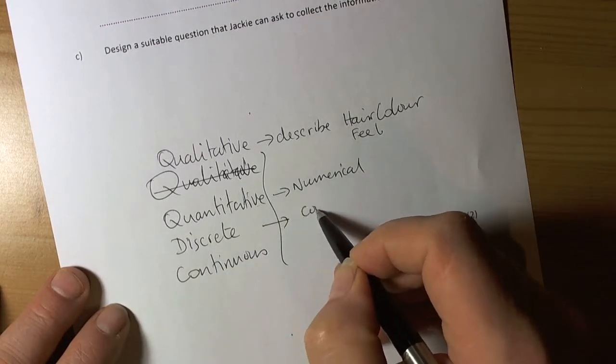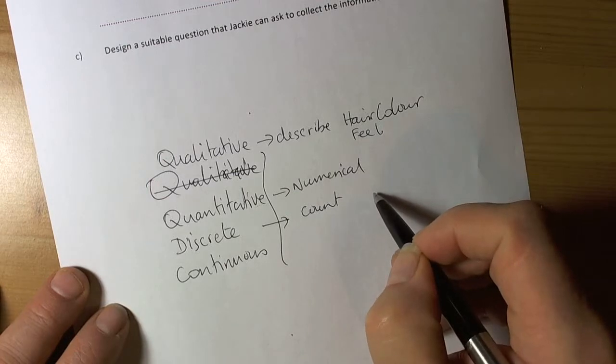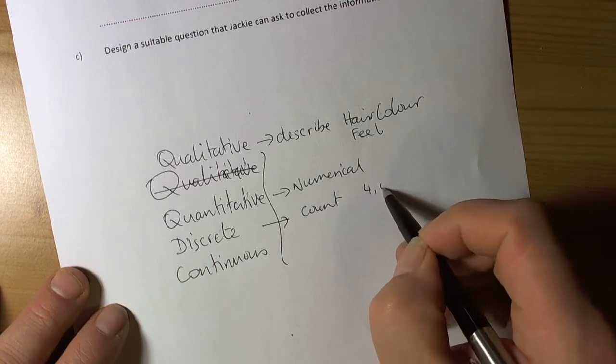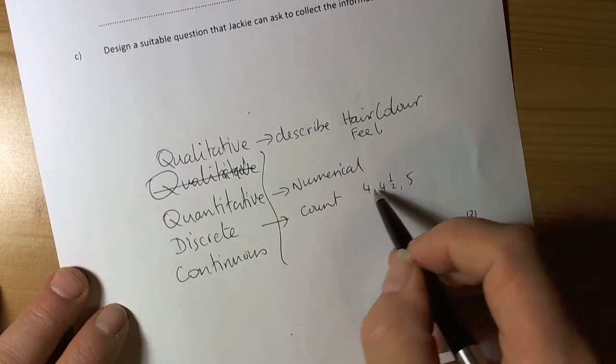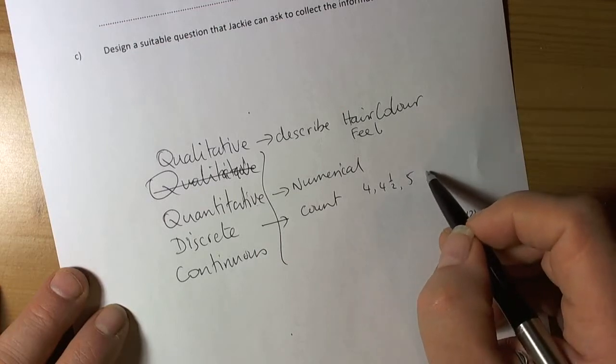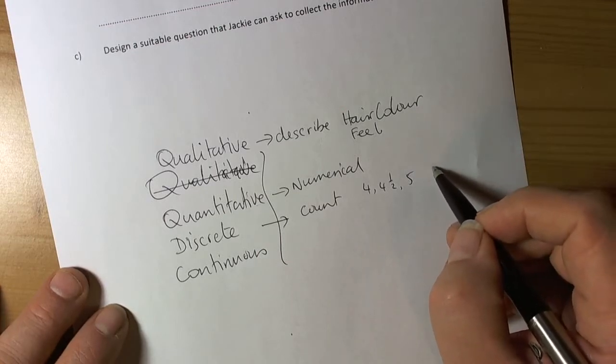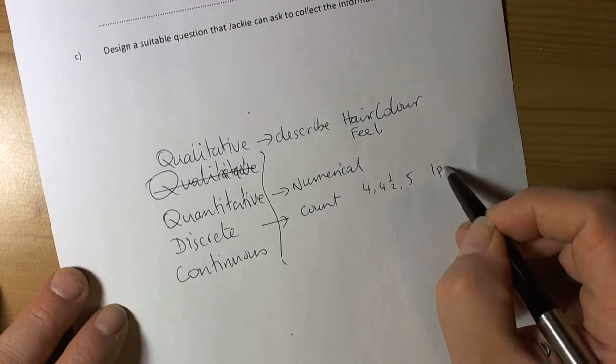Discrete means things you count, have only specific values. So shoe size - four, four and a half, five - only certain values can be taken. Whole numbers, so counting, I might have one person, two persons.